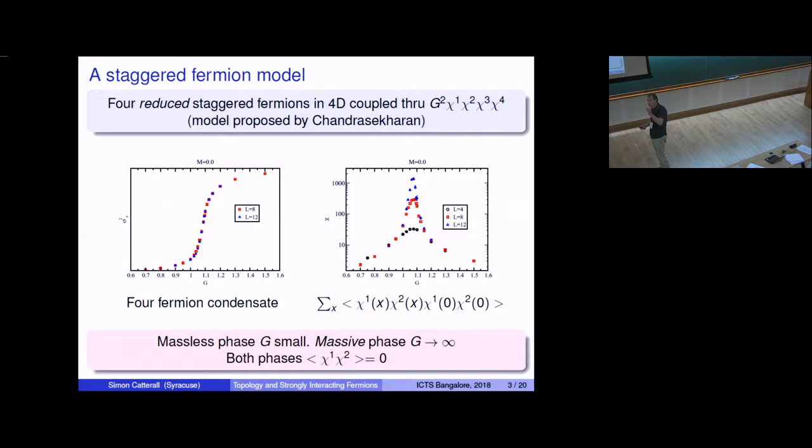You will have four reduced staggered fermions. So a reduced staggered fermion, there's a single Grassmann at each lattice site, at each point in the lattice. So once you have that situation, there's a unique four-fermion interaction you write down by taking products of those reduced staggered fields at that site with some coupling constant. So this model was introduced by Shailesh a number of years ago in a context of three dimensions, but it can be lifted easily into four dimensions, and that's where I'll concentrate in this talk.